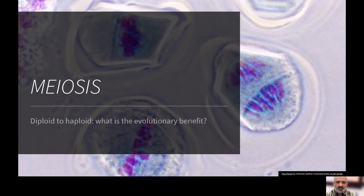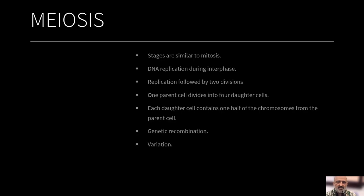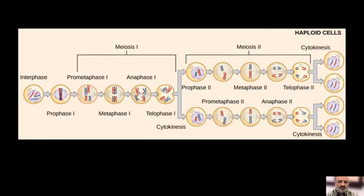In the case of meiosis, each cell will divide into four daughter cells. The process is similar, but the DNA replication as usual occurs during interphase, followed by two divisions — meiosis one and two — and one parent cell divides into four daughter cells. Each daughter cell contains one half of the chromosomes from the parent cell. There is genetic recombination, called homologous recombination, and this leads to variation. This is why, for example, all the peas in a pod do not look similar, or you do not look similar to your siblings.